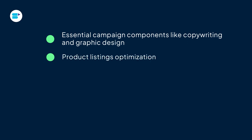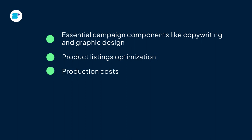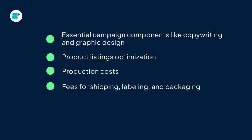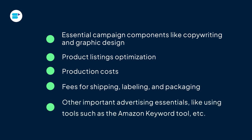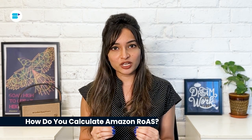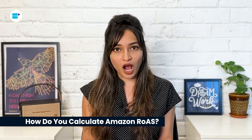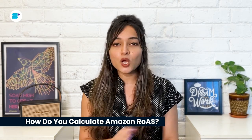You've got to think about essential campaign components like copywriting and graphic design, make sure your product listings are optimized, account for production costs, fees for shipping, labeling and packaging, and other advertising essentials like using tools such as an Amazon keyword tool.